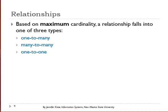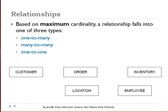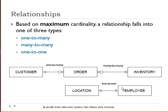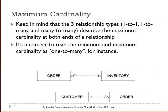The maximum cardinality — the symbol closest to the entities on either side of the relationship — tells us the relationship type. We have a one-to-many because we have a maximum of one and a maximum of many. We have a many-to-many between order and inventory because we see the crow's foot on each end. And we have a one-to-one relationship because that is the maximum at each end. Keep in mind that one-to-one, one-to-many, and many-to-many describe the maximum cardinality.